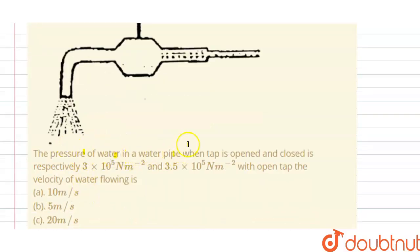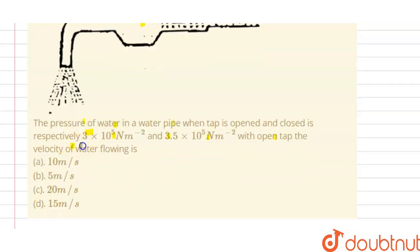The pressure of water in a water pipe - so this is our water pipe and this is the tap - when tap is opened and closed is respectively 3 × 10^5 N/m² and 3.5 × 10^5 N/m². With the open tap, the velocity of water is - options A, B, C, D are given here. We have to find the correct option.